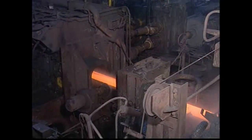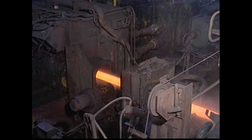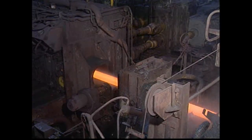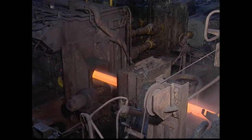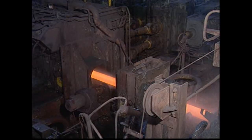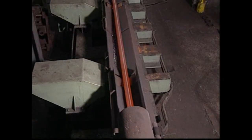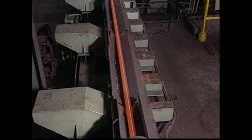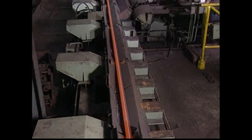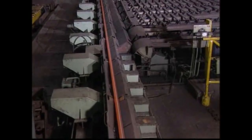The stretch reducing mill has a set of 22 stands, each stand equipped with specially formed rollers. The stand rollers are designed to progressively reduce the outer diameter gradually and ensure uniform wall thickness. The stretch rolling speed is about 2.5 meters per second.